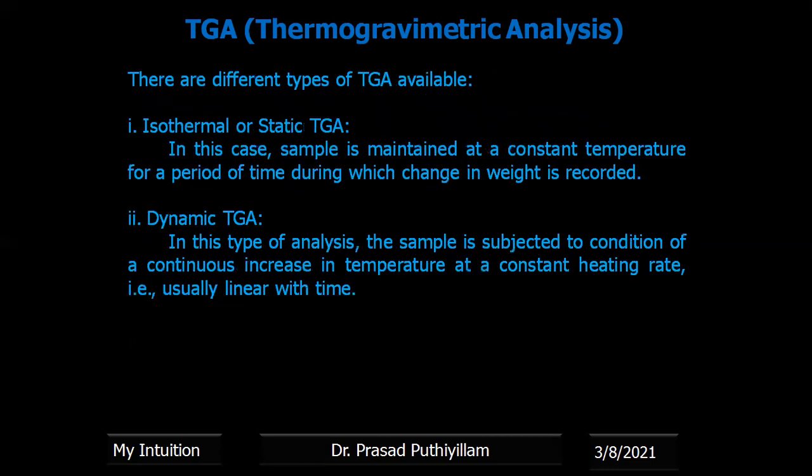There are three different types of TGA. Two of them are mentioned here: isothermal or static TGA, in which the sample is maintained at a constant temperature for a period of time during which the change in weight is recorded. And in dynamic TGA, the sample is subjected to conditions of continuous increase in temperature at a constant heating rate.